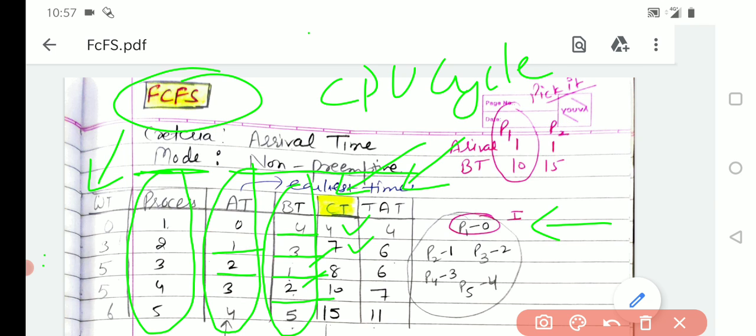For process 5 it arrives at time 4 and the burst time of this process is 5. So total completion time would be 10 plus 5, which is 15.